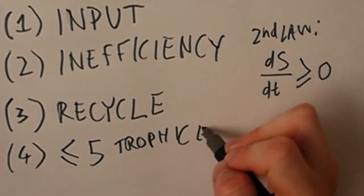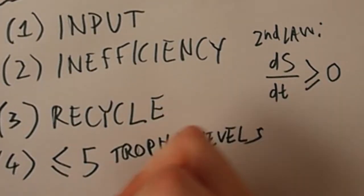Rule 4: There can be no more than five trophic levels because by that point not enough energy is available to form a next level.